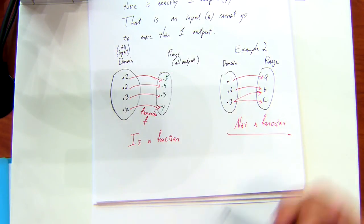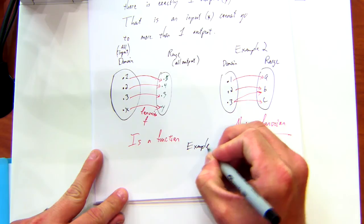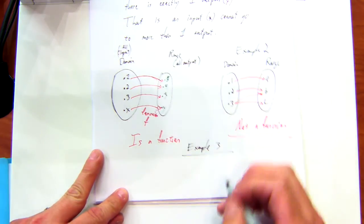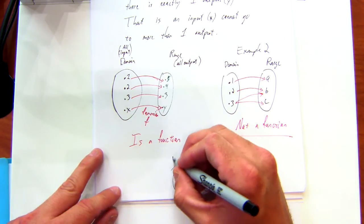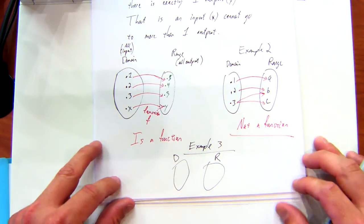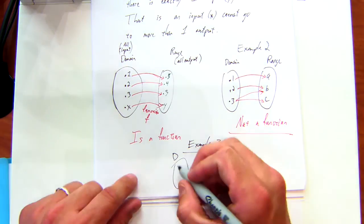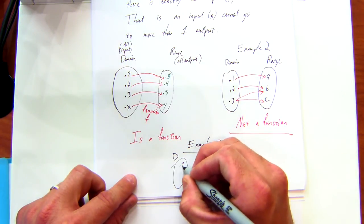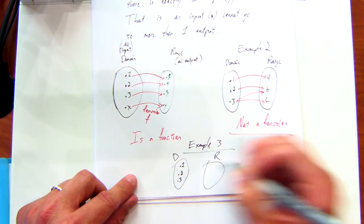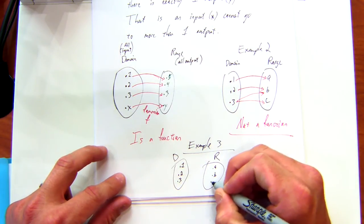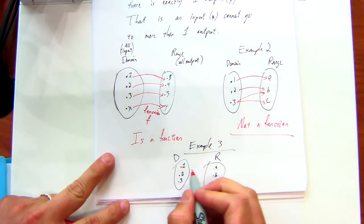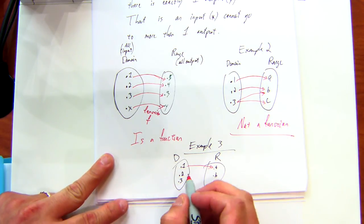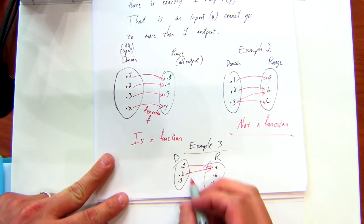One more example, three. Suppose I have something like this. Again, my domain and range, I'll shorten it with a D and an R. And let's say one, two, three. And let's go to A, B, and C again. Suppose one goes to A, two also goes to A, and three goes to B.